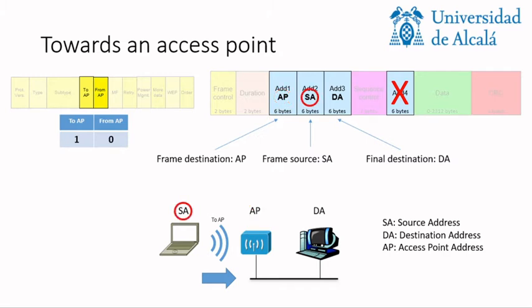In the second address, we indicate the previous step — the current step in the Wi-Fi communication, which is the source address. These two addresses represent the next step and the current step in the mobile communication. Additionally, in the third address we have the other address involved, which is the final destination of the frame. The fourth address field is not used, because we only have three addresses involved.